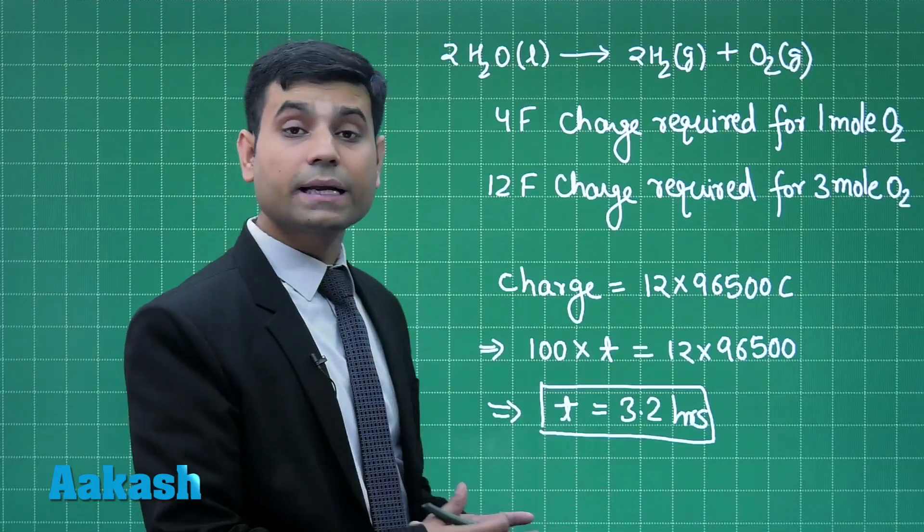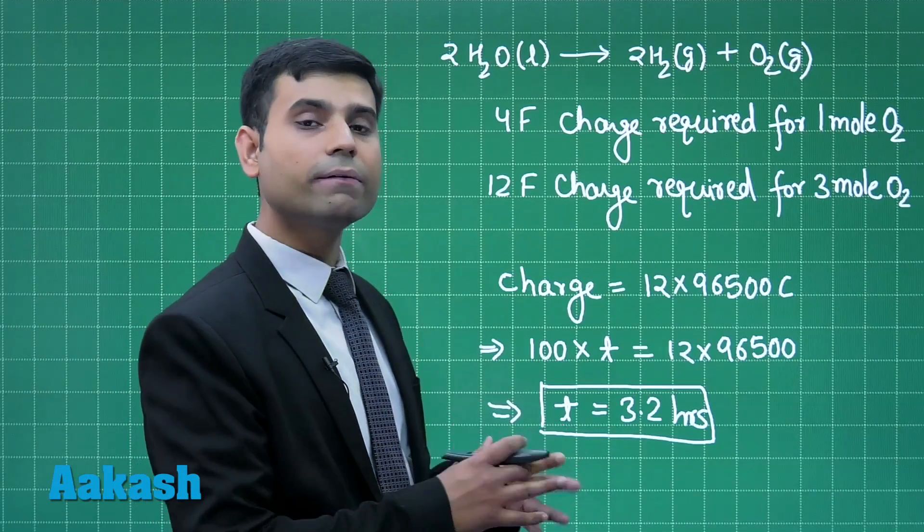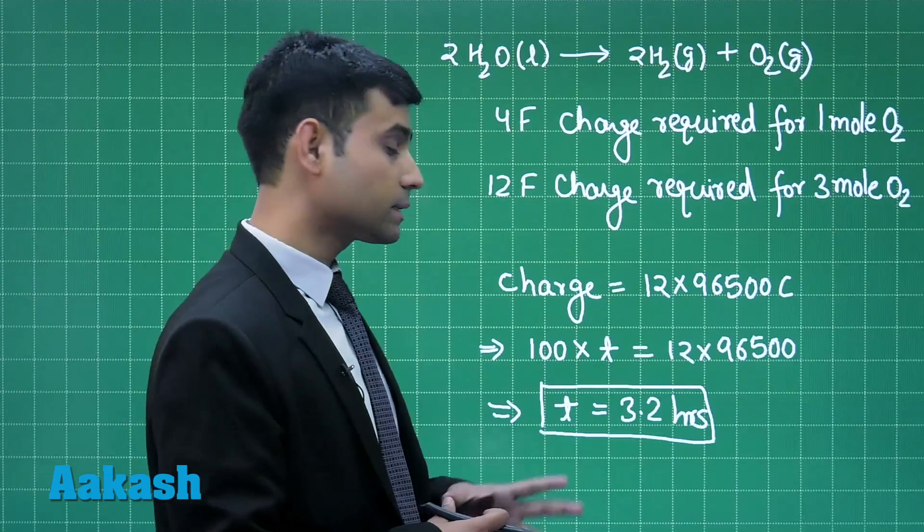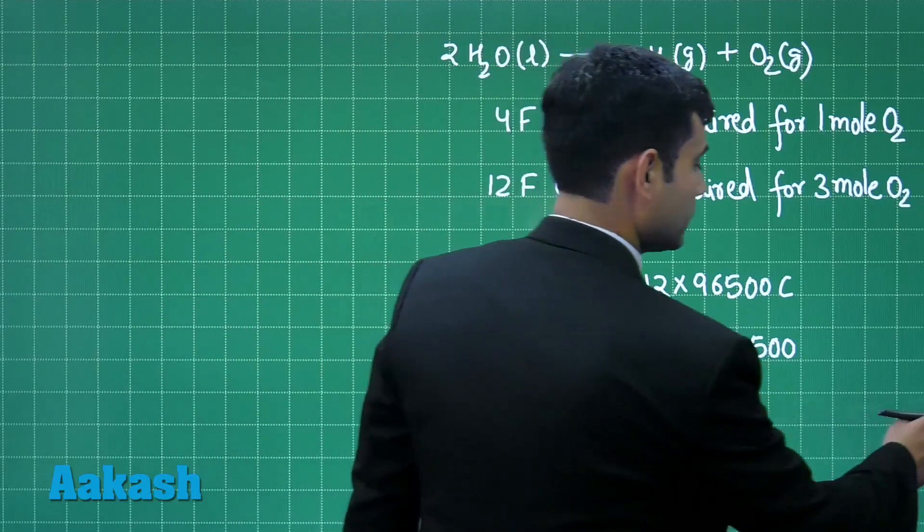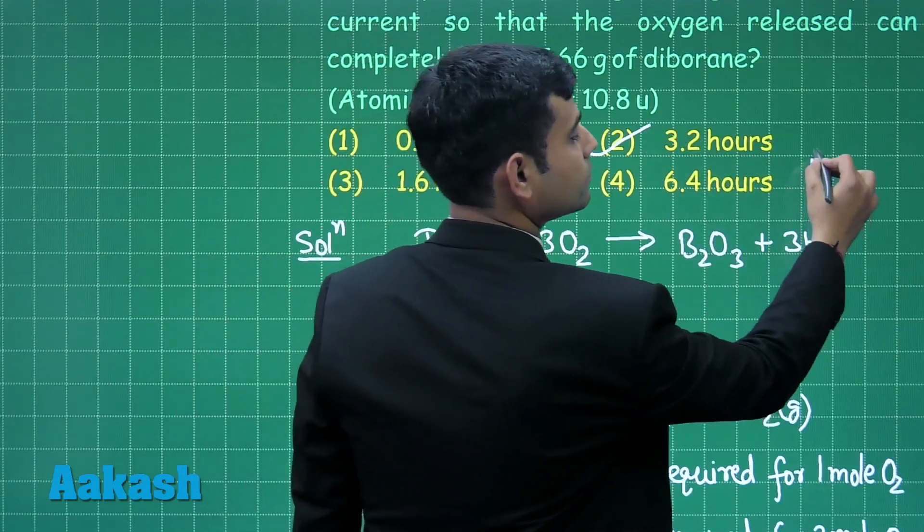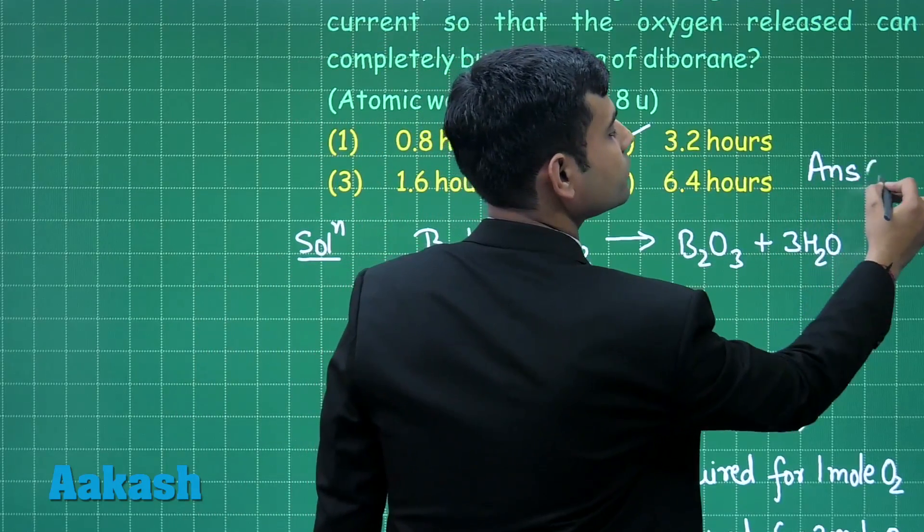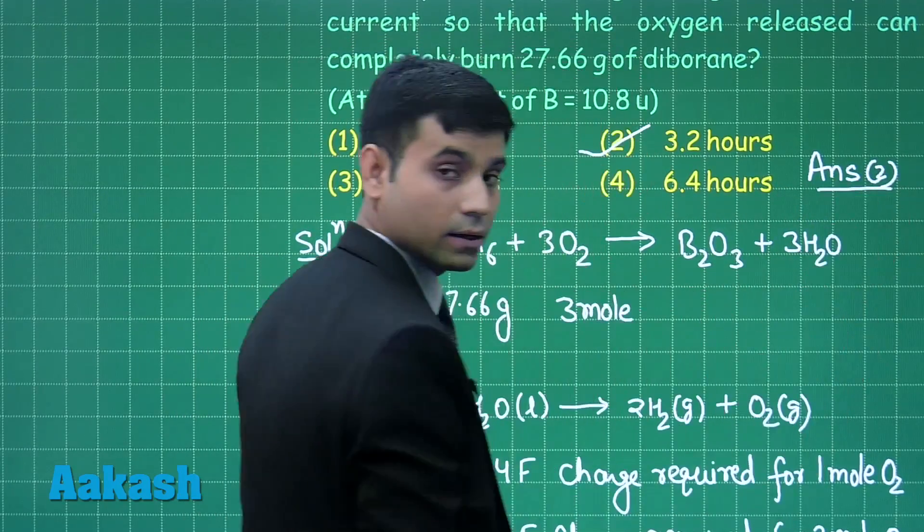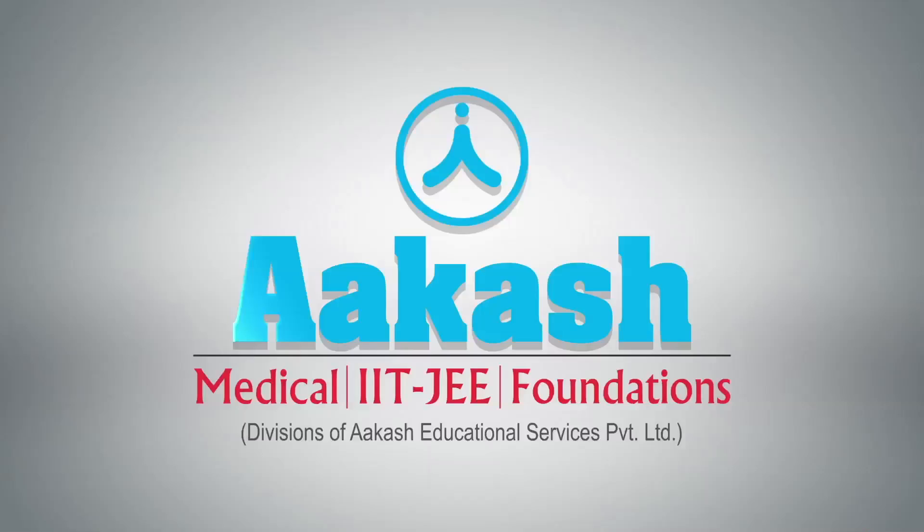Students, here the time will be in seconds, which when divided by 3600 gives us time in hours. So, the correct answer for this question is option 2. Now, let us move to the next question.